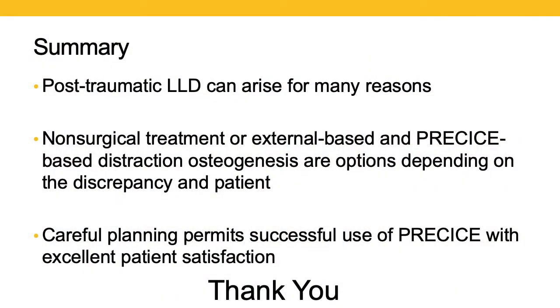In summary, there are a number of different etiologies for post-traumatic limb length discrepancy, and considering the source is an important first step. There are many different ways to treat limb length discrepancy — non-surgically, external-based, or using Precise for distraction osteogenesis — and you want to tailor your approach to the magnitude of the discrepancy and the particulars of the patient's circumstances. When you do choose to use Precise, it's really all about planning and preoperative preparation for a surgery that is relatively straightforward and familiar to those of us taking care of trauma patients. Thank you — we're going to open things up to the questions you've been submitting.